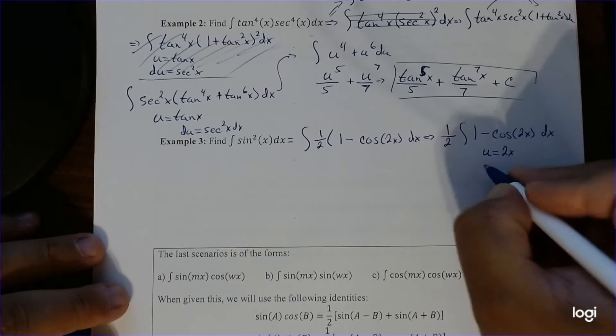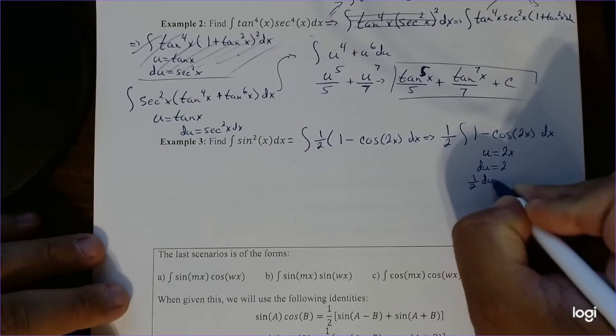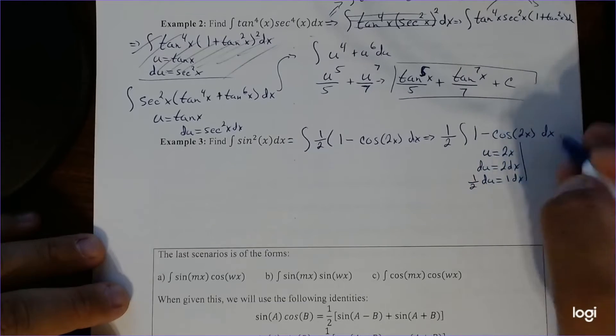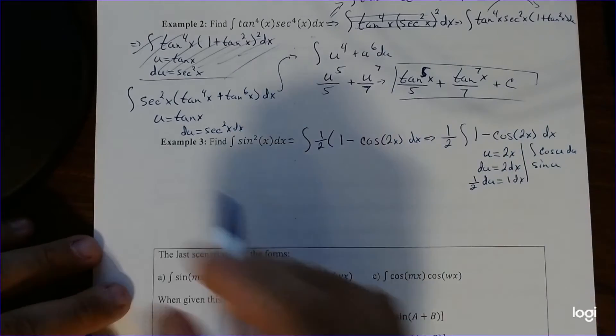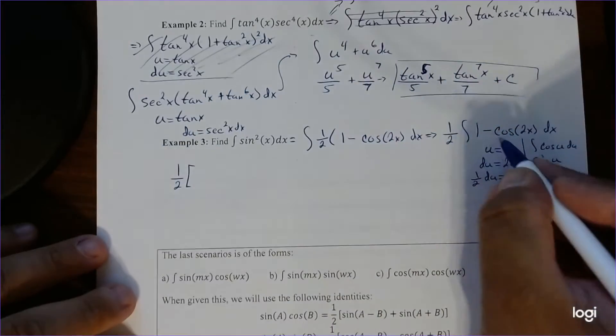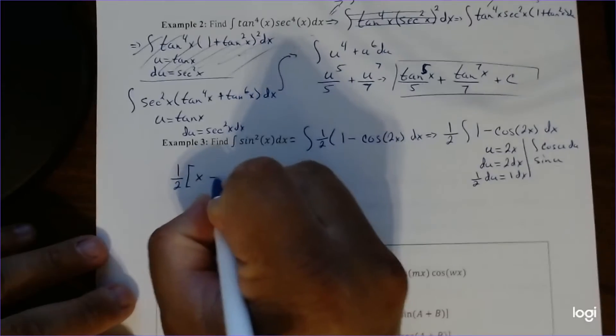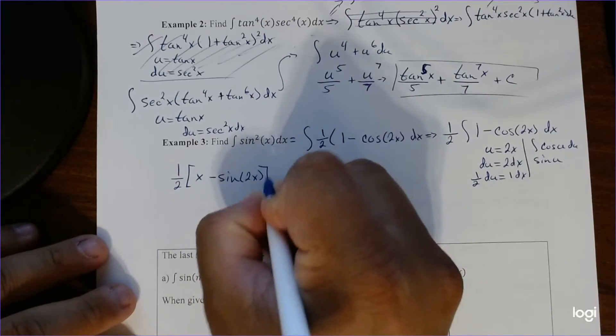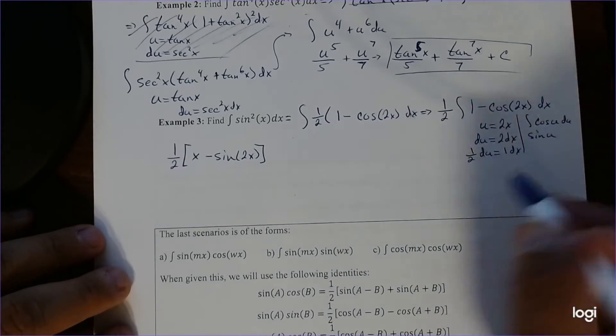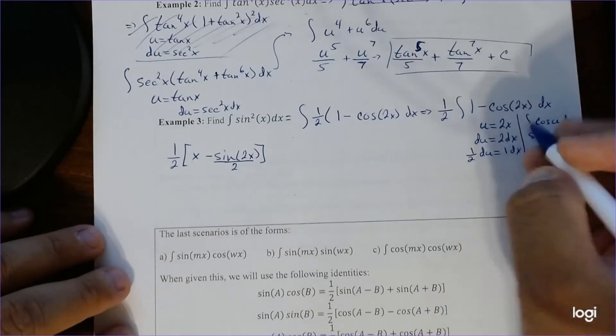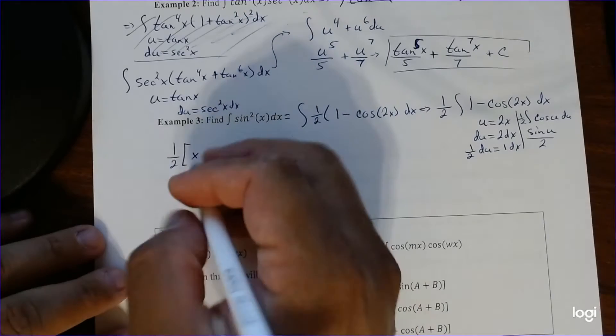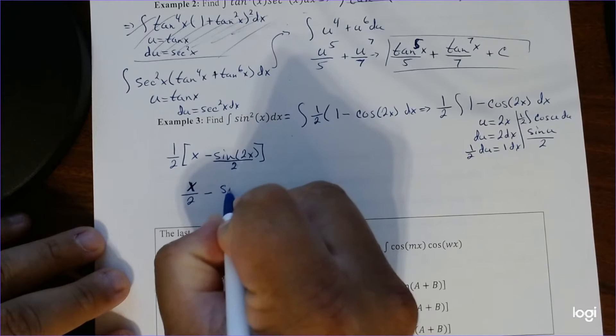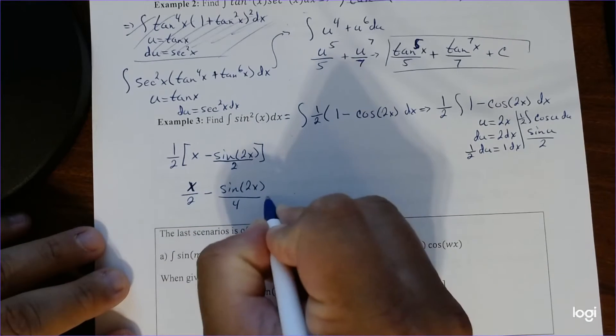So we're going to let u equal 2x. Du is 2. So that's going to be divided by 2. So this is going to be the integral of cosine u. Integral of cosine is going to be sine. So this is going to be sine of u. So if we go back over here, it's going to be one-half times integral of one is just x. Integral of negative, we just have to be negative. So negative sine of 2x. Oh, and I almost forgot that one-half as well. Put this over 2. Don't forget about the half. The half has to be right here. And then finally, just distributing that one-half gives us our final answer. And there we go.